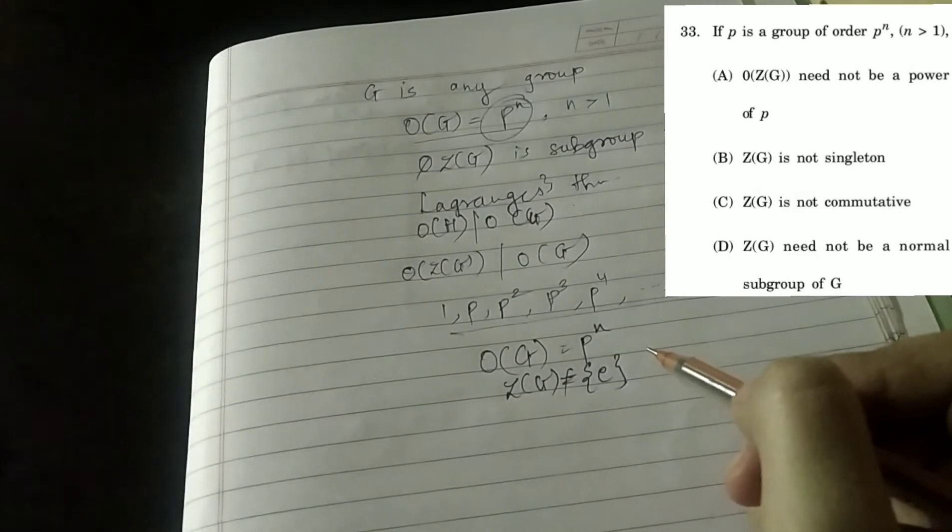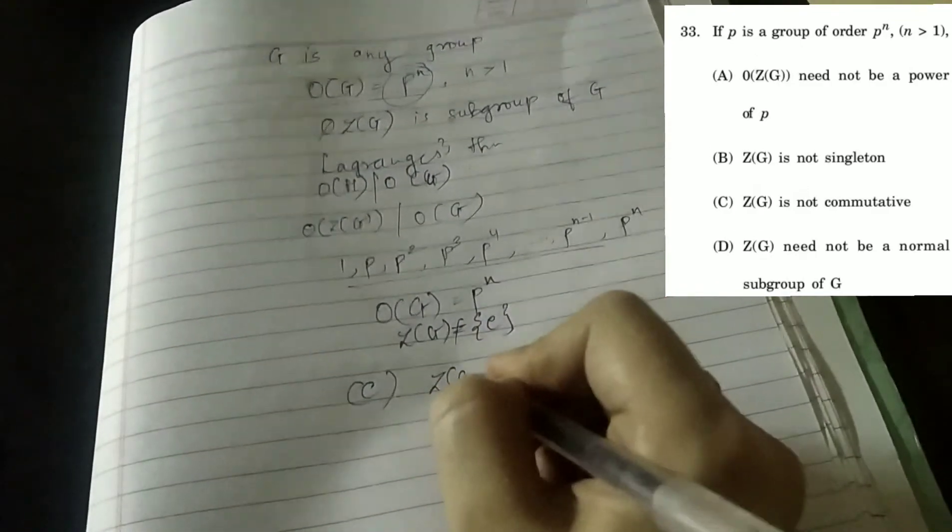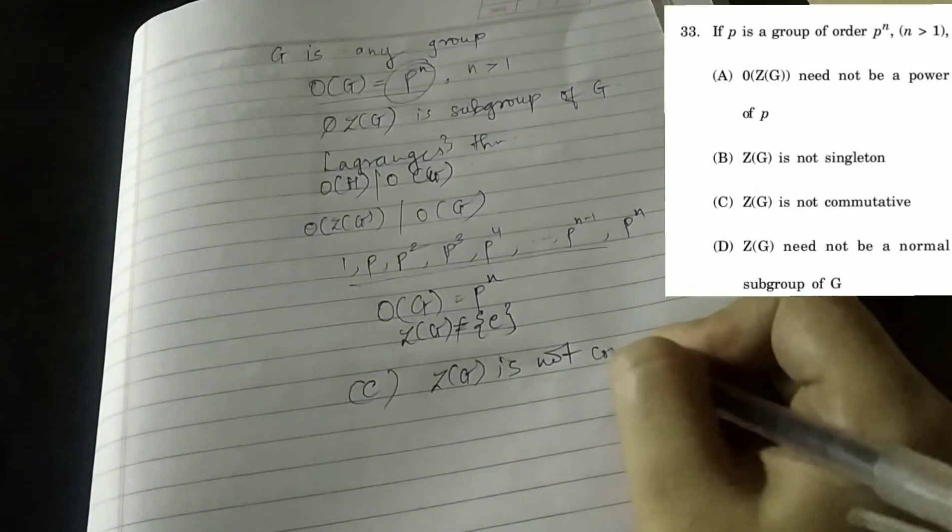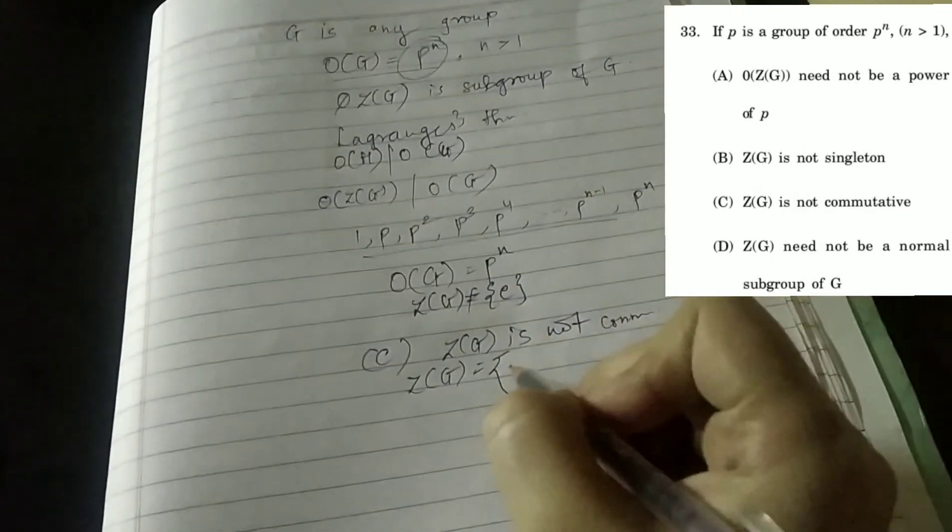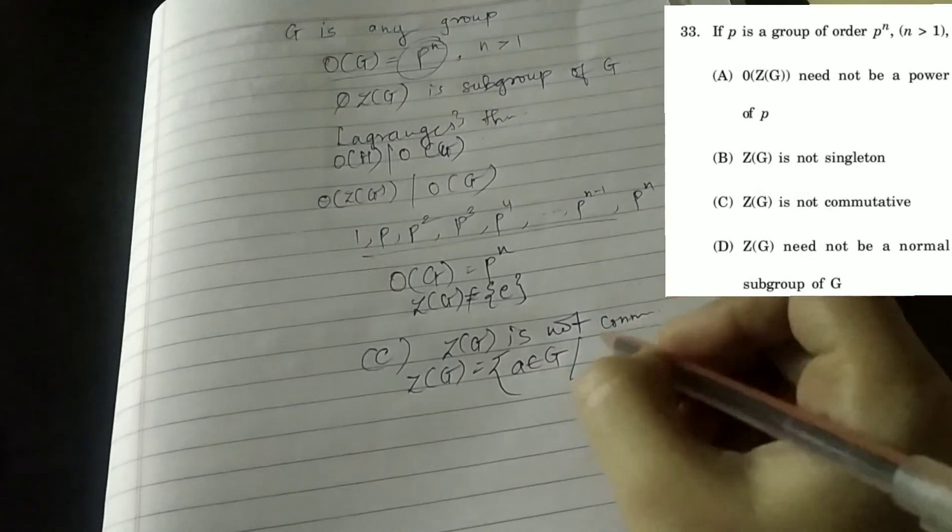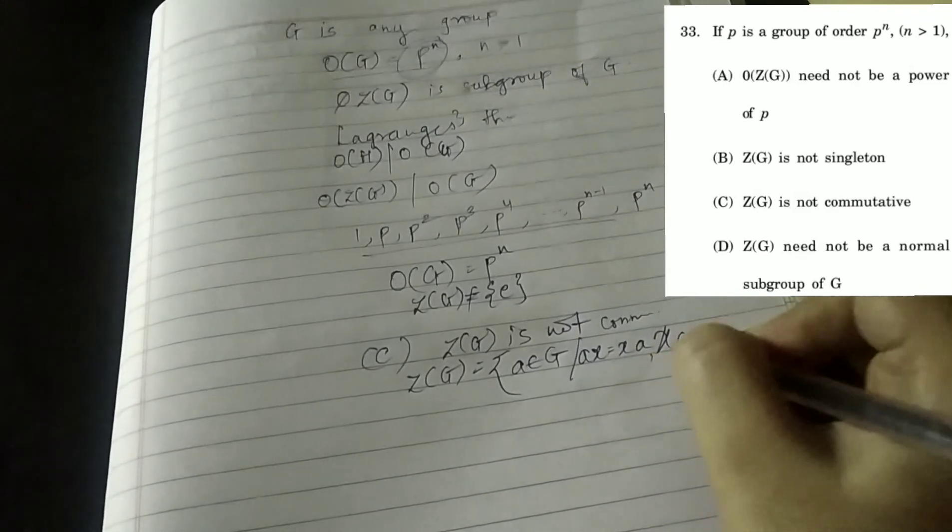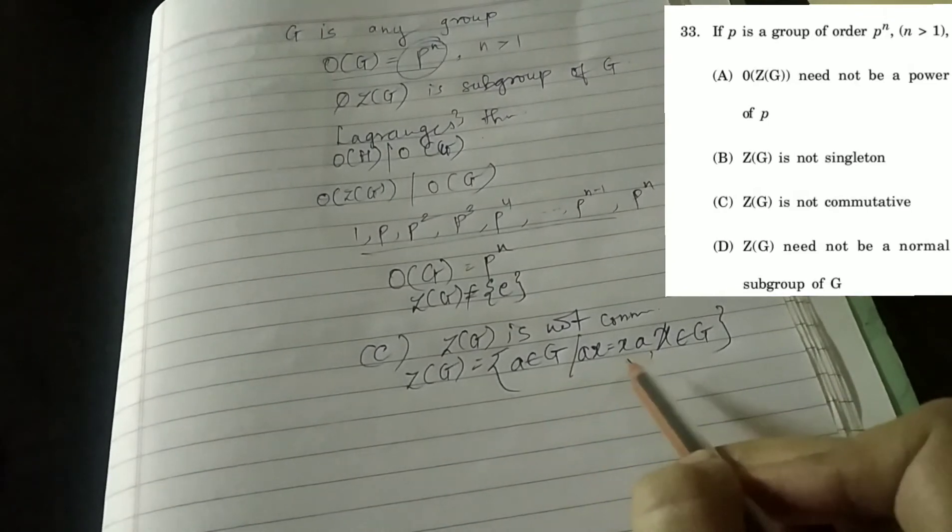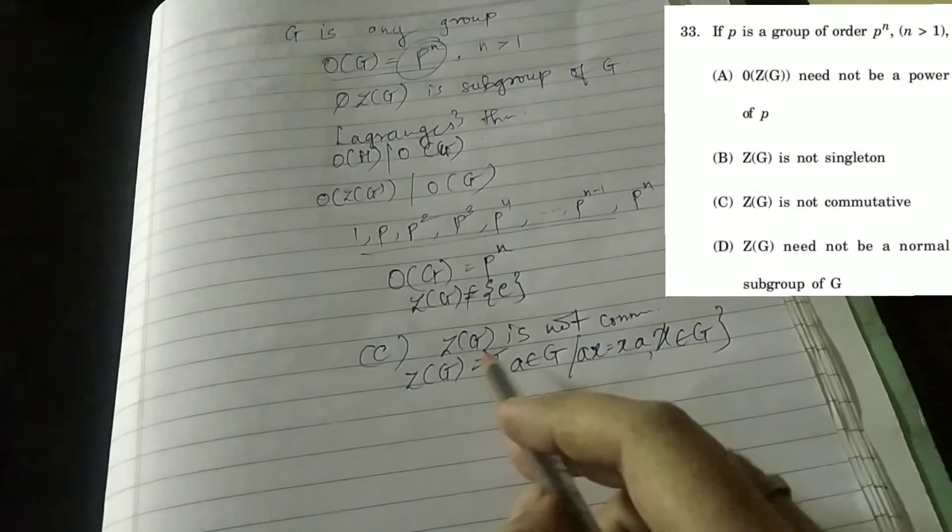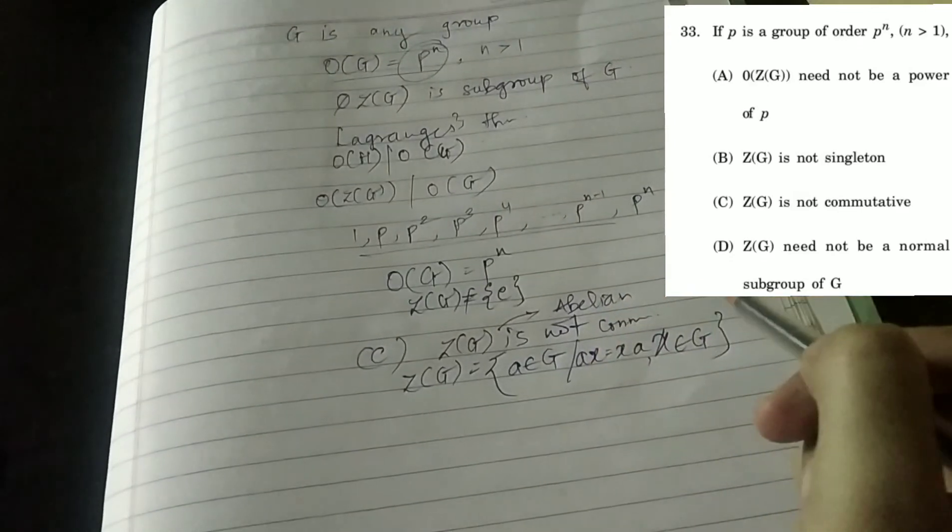Let us check option C and D. Option C says that Z(G) is not commutative. So guys see, what is definition of Z(G)? It is the collection of all such elements of G which commutes with every other element of G, where x belongs to G. Z(G) is collection of all such elements in G which commutes with every other element of G, so it has to be commutative. Since Z(G) is abelian group, it has to be commutative. So our option C is also wrong.